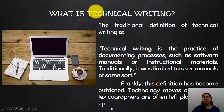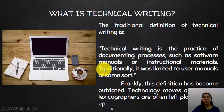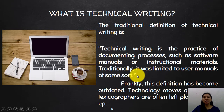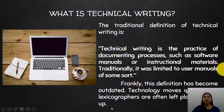So, what is technical writing? Another definition — the traditional definition — is that technical writing is the practice of documenting processes such as software manuals or instructional materials. Traditionally, it was limited to user manuals of some sort. Before, when you say technical writing, you were to write instructional materials for a certain machine — how to use them, how to take care of those machines, and such. Frankly, this definition has become outdated; technology moves quickly, and lexicographers are often left playing catch-up.